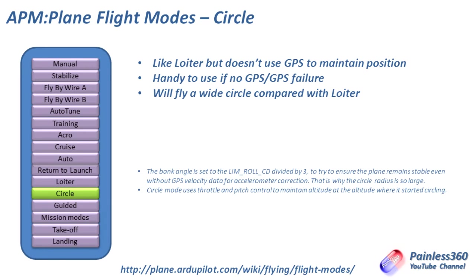Circle is very similar to loiter but with a key difference — whereas loiter uses GPS to maintain position around a point, circle doesn't really care. It just flies a nice big wide circle and keeps doing that. If there's wind pushing it down the field, unfortunately the circle will drift with it. It's handy if you have a GPS failure, as circle doesn't rely on GPS for the craft to perform an automatic function.